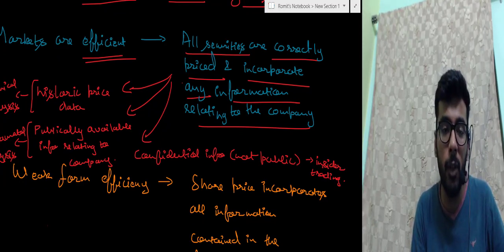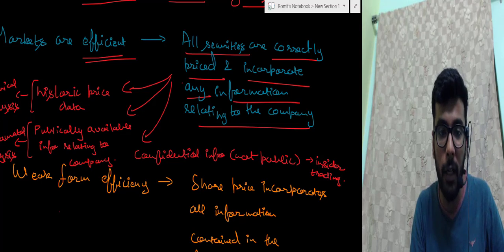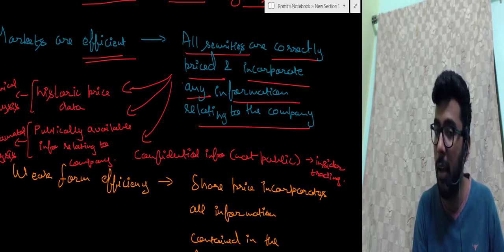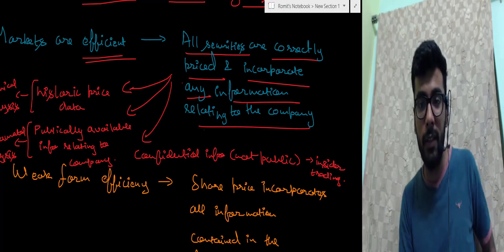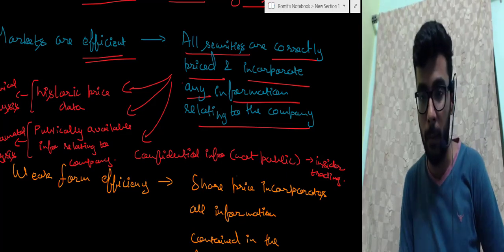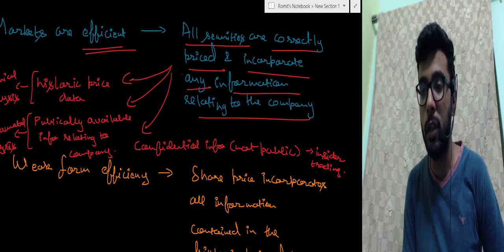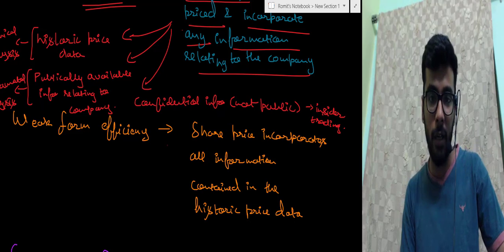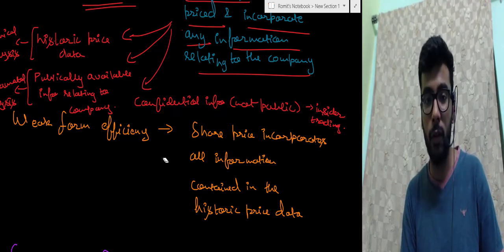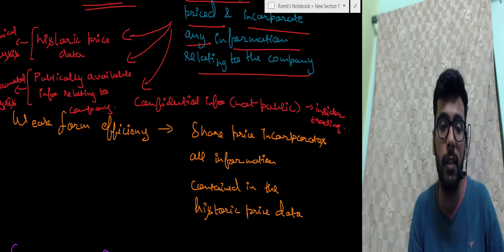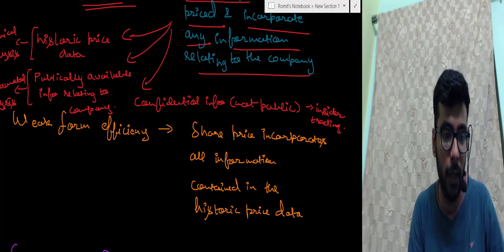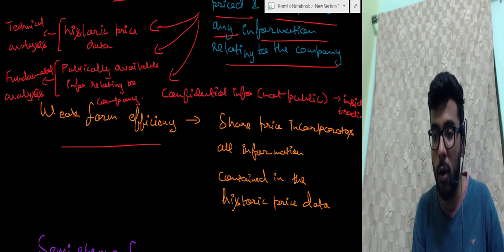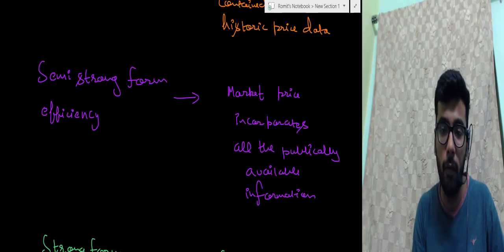These three types of analysis — technical, fundamental, and insider trading — can only generate excess returns in inefficient markets. In efficient markets, all three are not possible. There can be multiple types of efficiency in the market with different meanings and implications. We will discuss three types: weak form efficiency, semi-strong form efficiency, and strong form efficiency.